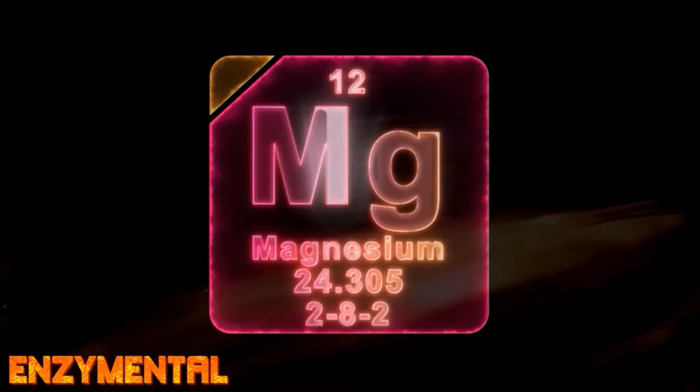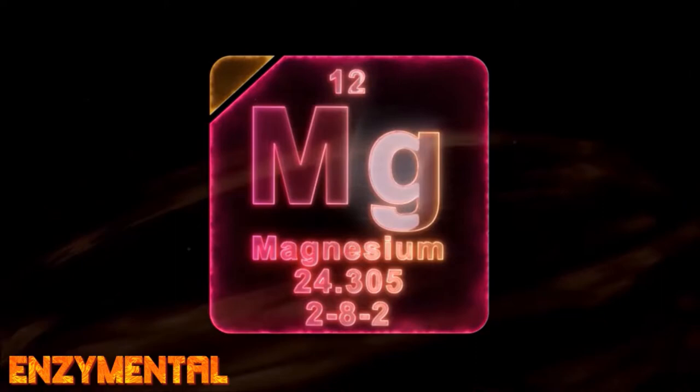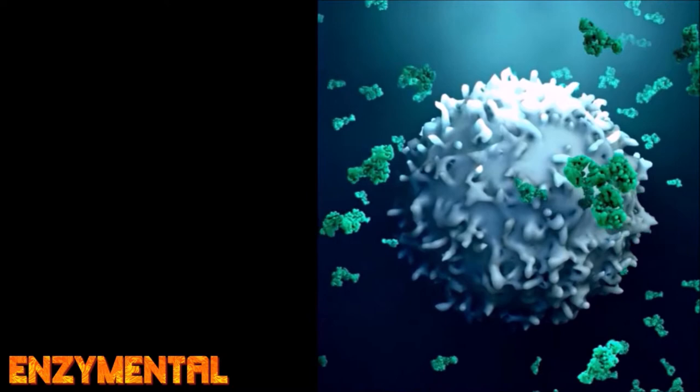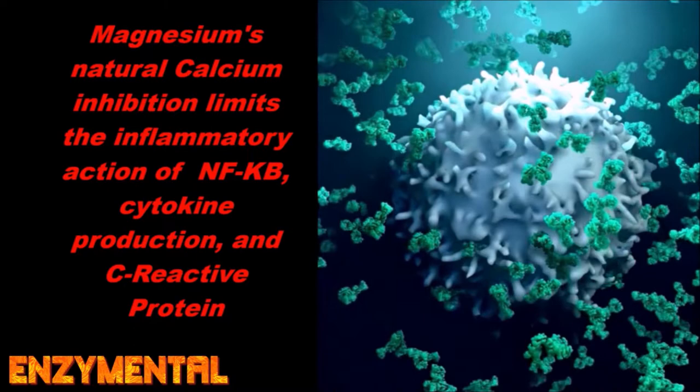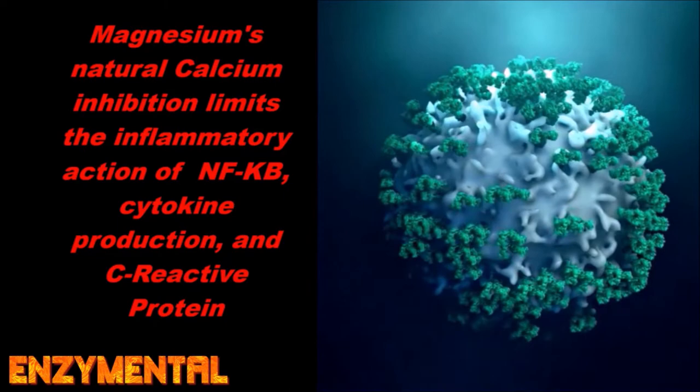So where does magnesium fit into all of this? Magnesium's well-known status as a natural calcium channel blocker inhibits calcium influx in immune cells like B cells and T cells, which are both primary players of the immune system. Magnesium's natural inhibition of calcium then significantly limits the actions of nuclear factor kappa B, cytokine production, C-reactive protein, and overall inflammation.